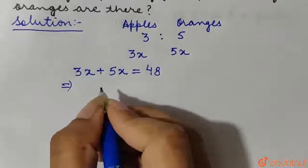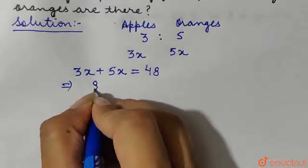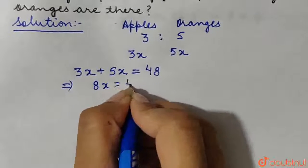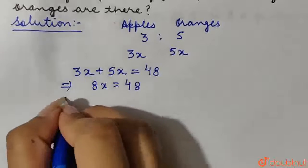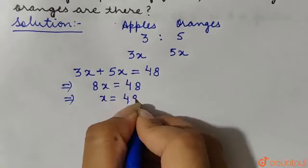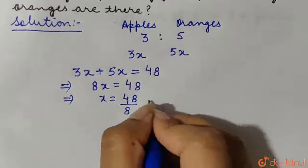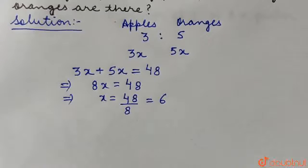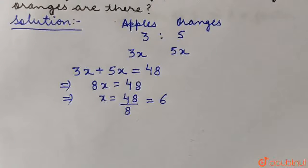So we have 3x plus 5x which is equal to 8x equal to 48. From here we have x is equal to 48 divided by 8 which is equal to 6. So x is equal to 6.